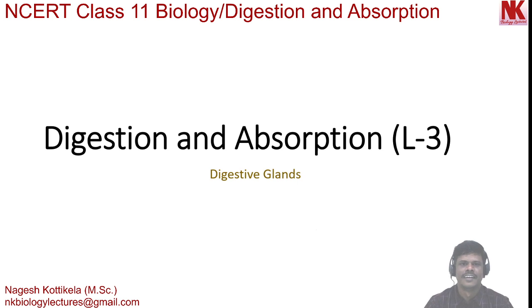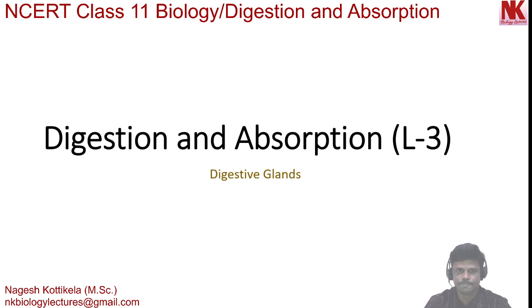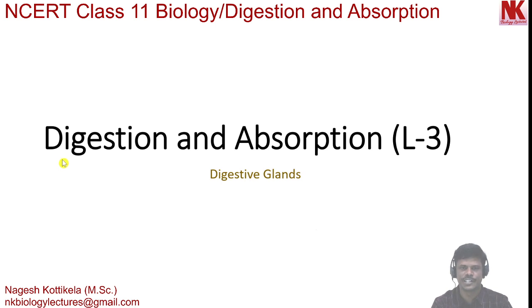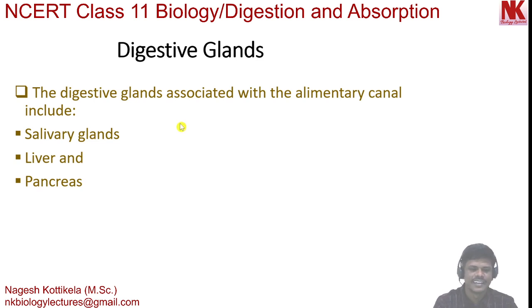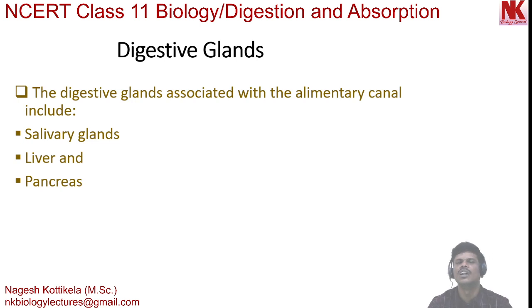Hey guys, welcome back. In my previous session I discussed about the different layers present in the wall of the alimentary canal, their modifications and importance in the process of digestion and absorption. Today I'll be discussing about the topic digestive glands, from the chapter digestion and absorption from class 11 biology. Digestion is the process of breakdown of complex food materials into simpler absorbable units. Digestive glands are those structures which secrete digestive juices and play a very important role in the process of digestion. The digestive glands associated with the alimentary canal include salivary glands, liver and pancreas.